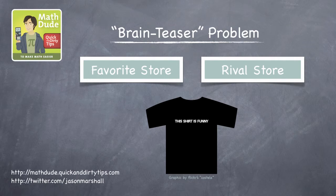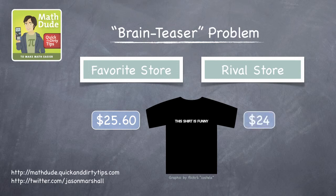Remember, your favorite store's price was $25.60, so the rival store's offer of $24 is a better deal. The difference isn't huge in this case, but if the item of interest had been a pricey one, it would have quite literally paid to know the difference between the two offers.